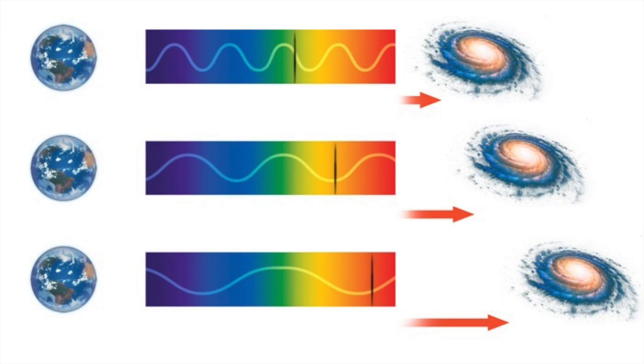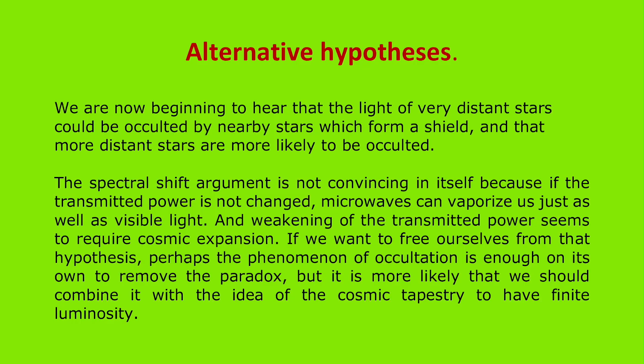Moreover, we are now beginning to think that the light of very distant stars could be occulted by nearby stars which form a shield, and that more distant stars are more likely to be occulted. The spectral shift argument is not convincing in itself because if the transmitted power is not changed, microwaves can vaporize us just as well as visible light. And weakening of the transmitted power seems to require cosmic expansion. If we want to free ourselves from that hypothesis, perhaps the phenomenon of occultation is enough on its own to remove the paradox.